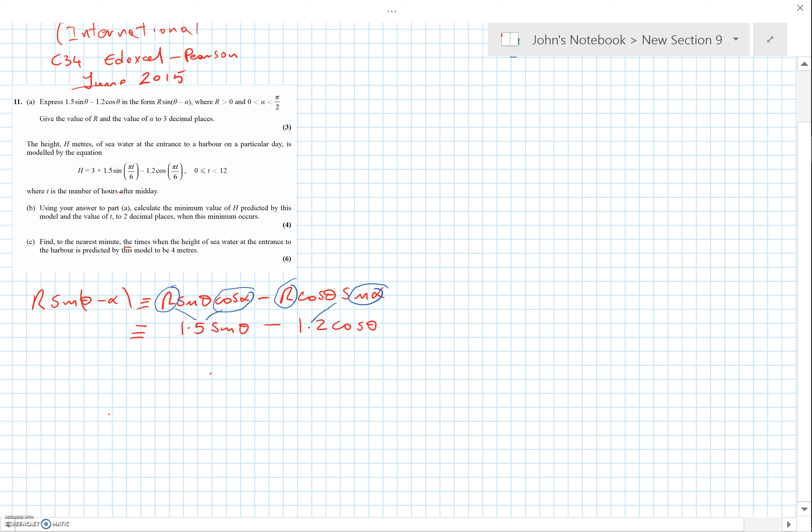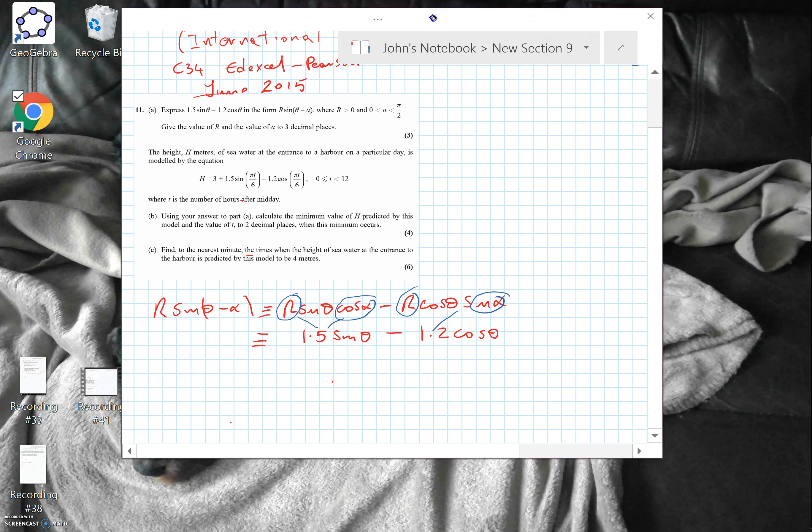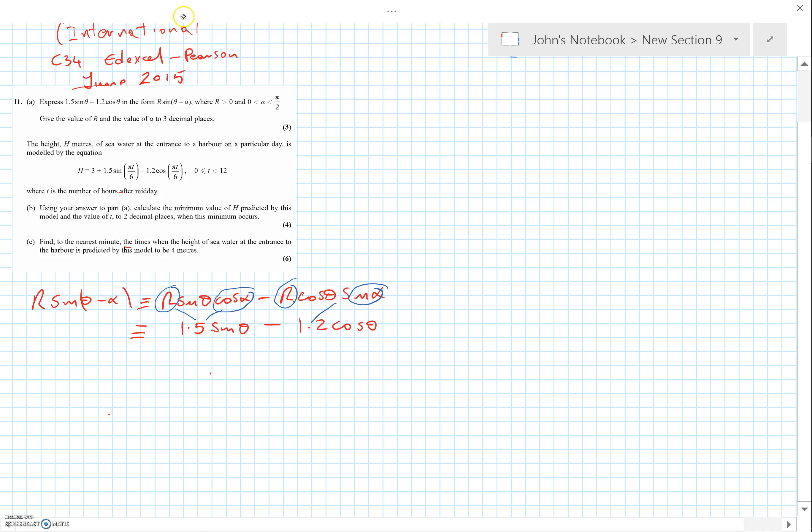Let's work with that. We've got R cos α equals 1.5 and R sin α equals 1.2. Squaring and adding, you can think of it as Pythagoras or using the identity cos² + sin² = 1.